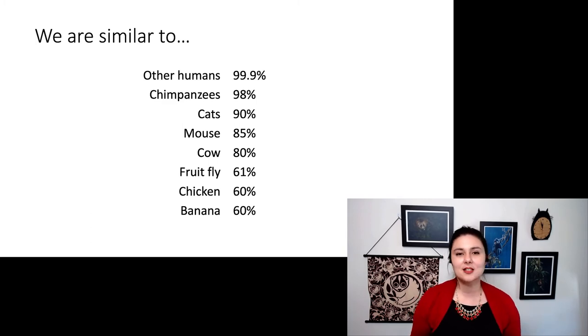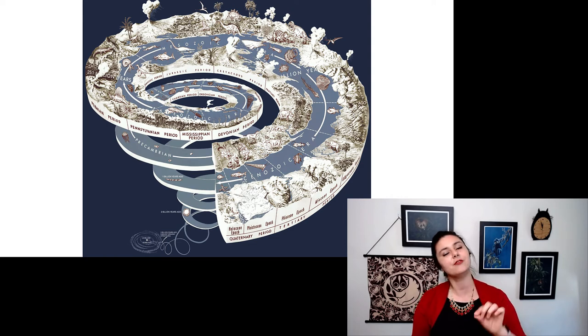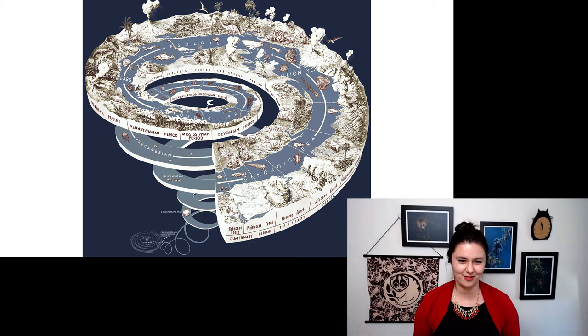So rather than just compare ourselves to the species that are living today, we also like to look at the fossil record because this can help us understand how things came about to be. This is one of my favorite visualizations of the fossil record. The thing that's closest to us is right now. And the farther back you go on this spiral, the farther away you are from the present, the farther back in time you're going. And you can see we actually get less and less life. So this shows you that as time has gone on, we have more different forms of life that have evolved.